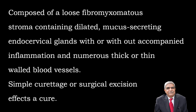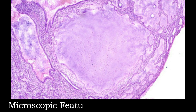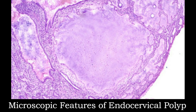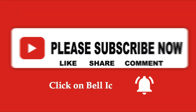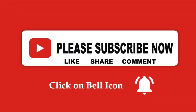Microscopic appearances: endocervical polyps are composed of loose fibromyxoid stroma containing dilated mucus-secreting endocervical glands, with or without accompanying inflammation and numerous thick- or thin-walled blood vessels, as shown in the microphotograph. There is a lining of mucus-secreting columnar epithelium, and below that the endocervical glands are dilated — one is cystically dilated and contains secretions — all embedded in the stroma. Surgical removal of these polyps cures the patient.